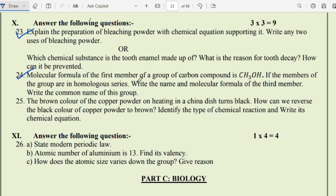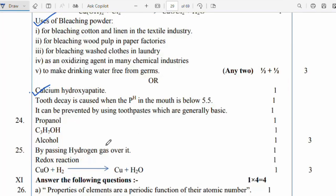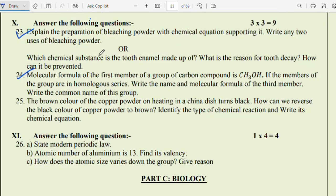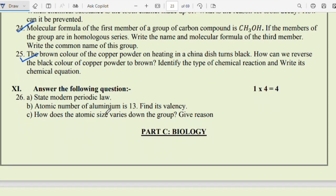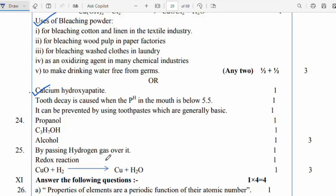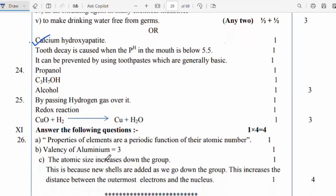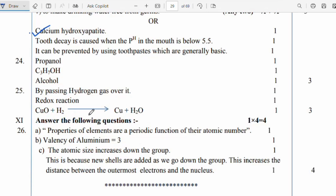Question 24: Molecular formula of the first member of the group of carbon compound is CH3OH, methyl alcohol. If the members of the group are a homologous series, write the name and molecular formula of the third member and write the common name of the group. Propanol, C3H7OH. The common group is the alcohol group. Question 25: The brown color of copper powder on heating in a china dish turned black. How can we reverse the black color of copper powder to brown? Identify the type of chemical reaction and write its chemical equation. By passing hydrogen gas over it. A redox reaction will take place. This is the reaction.